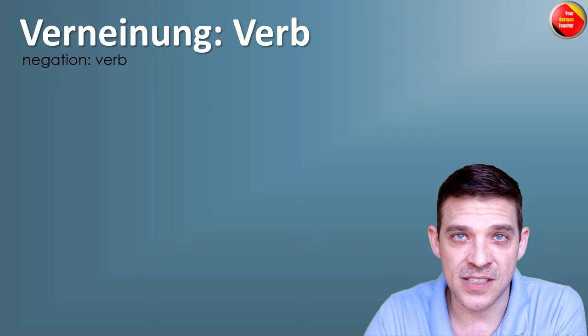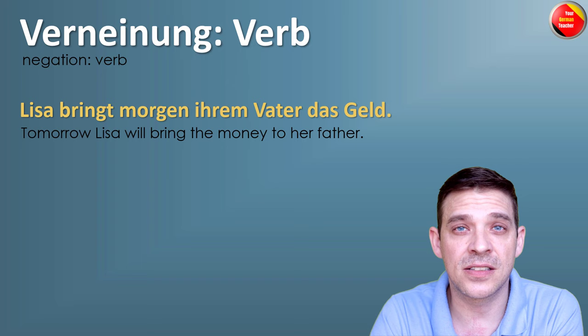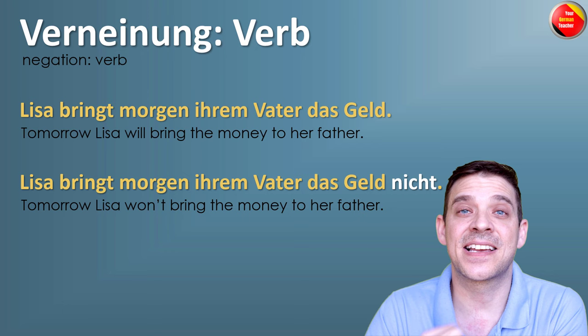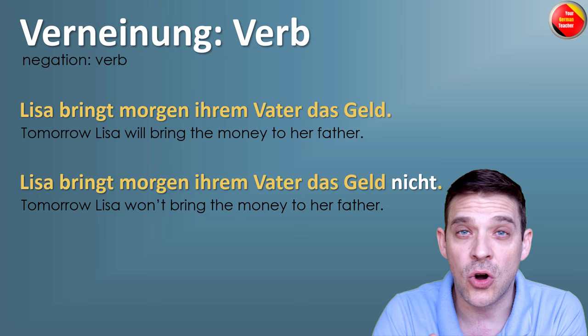We start with the verb — negation of the verb. Same sentence: 'Lisa bringt morgen ihrem Vater das Geld.' Now we want to negate the whole sentence — it's not going to happen. So where we put the NICHT is at the end. This is the exception of this rule. If you want to negate a whole sentence, you just put NICHT always at the end: 'Lisa bringt morgen ihrem Vater das Geld nicht.' She will not bring the money tomorrow.